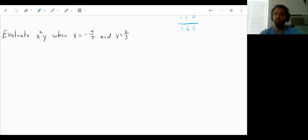Let's try one more problem here and then I'll cut you loose for the day. So we're going to evaluate x²y when x equals negative 4 fifths and y equals 2 thirds.